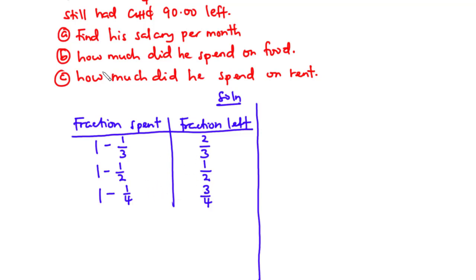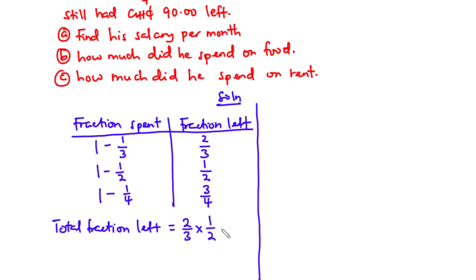To calculate the total fraction left, we take the product of the three fraction-left values. That is two thirds times one half times three quarters. Simplifying: three cancels with three, two cancels with two, giving one times one times one over one times one times four, which equals one over four. Therefore the total fraction left is one quarter.